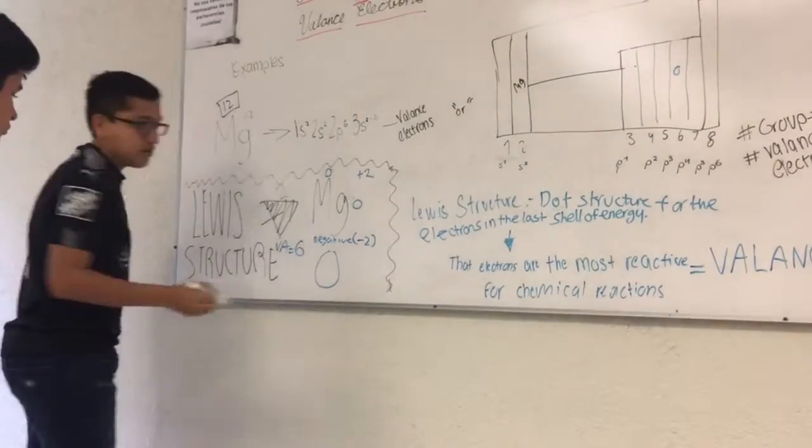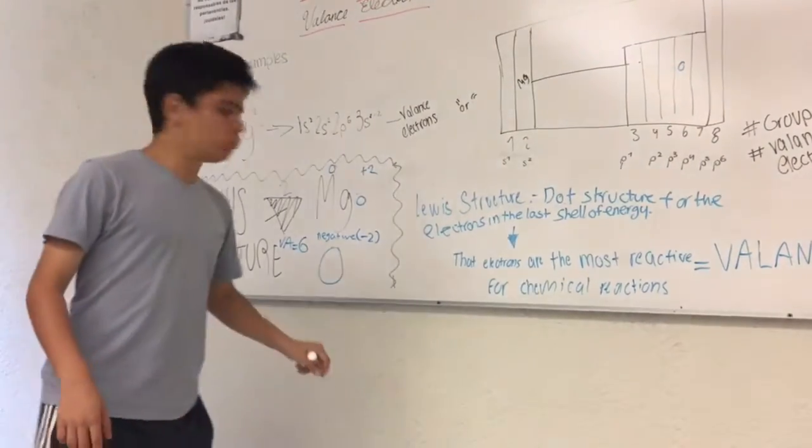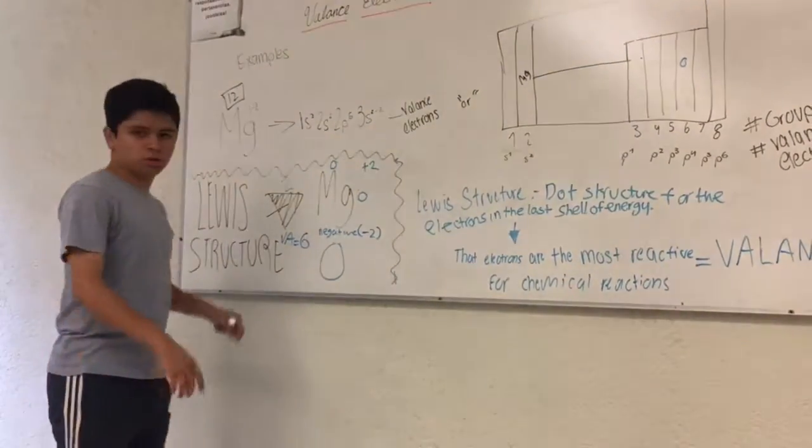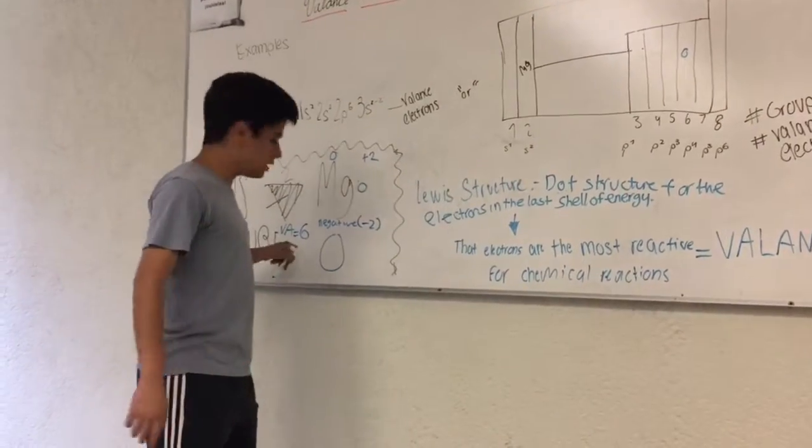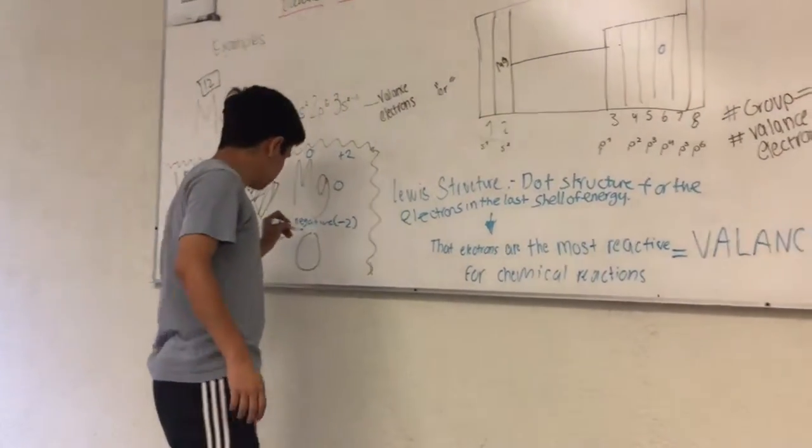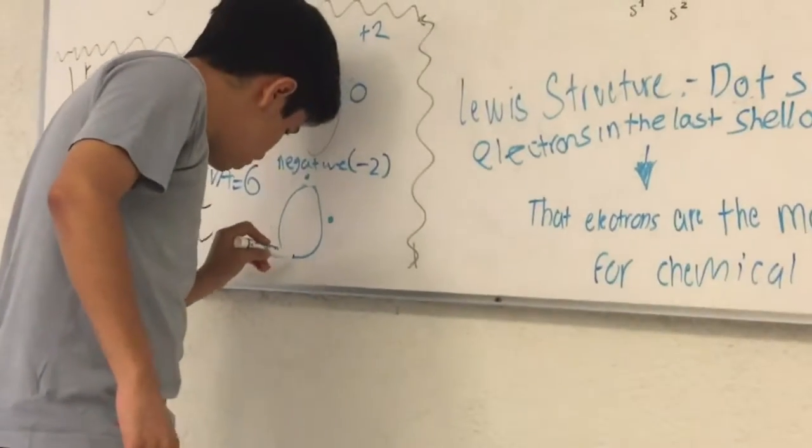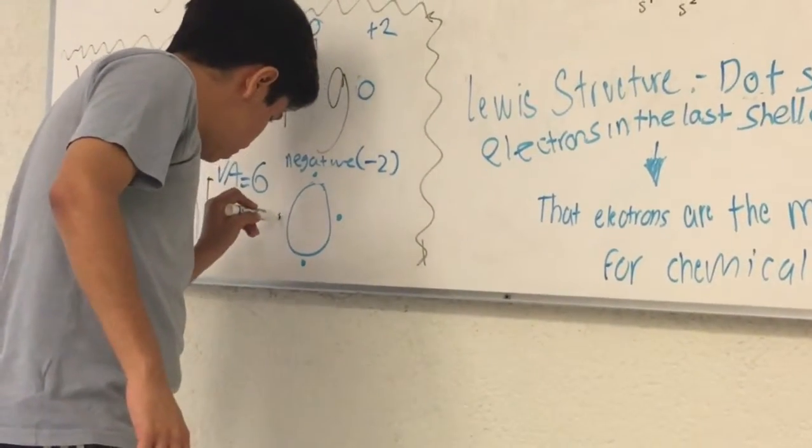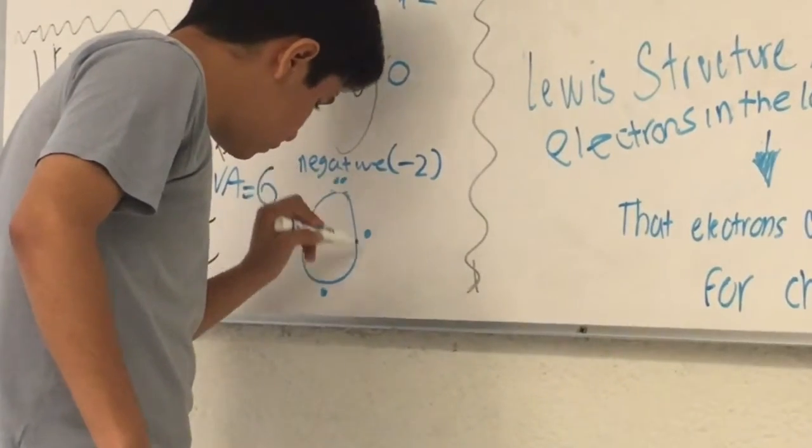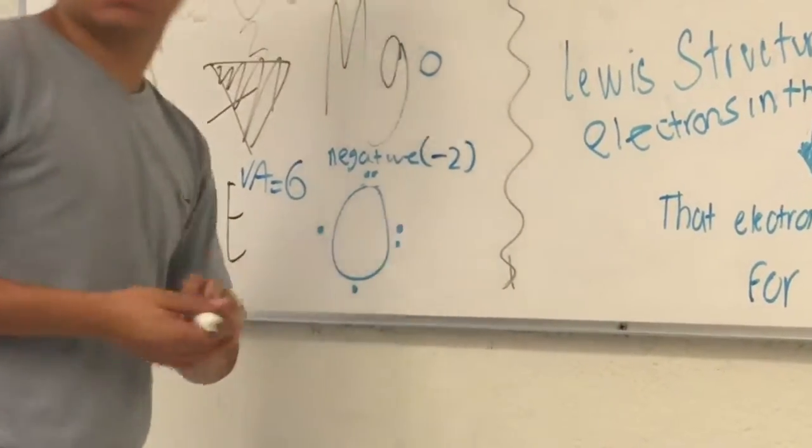So we're going to use the Lewis Structure with the valence structure. It's 6, so you write it clockwise. That's 2, 3, 4, 5, 6.